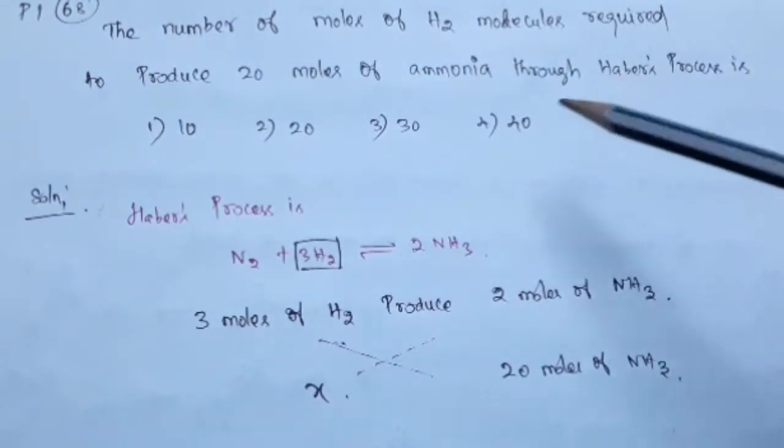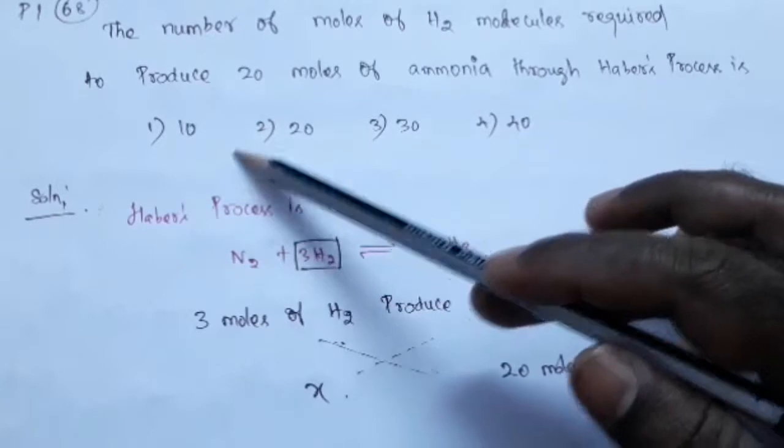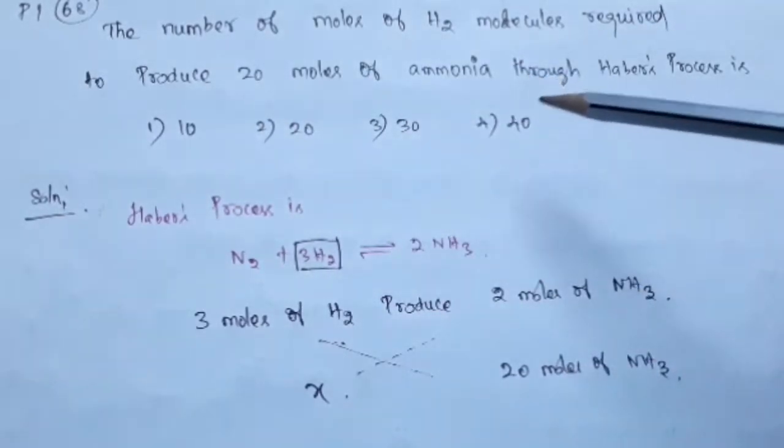Very simple question. The four options were given: 10, 20, 30, and 40.